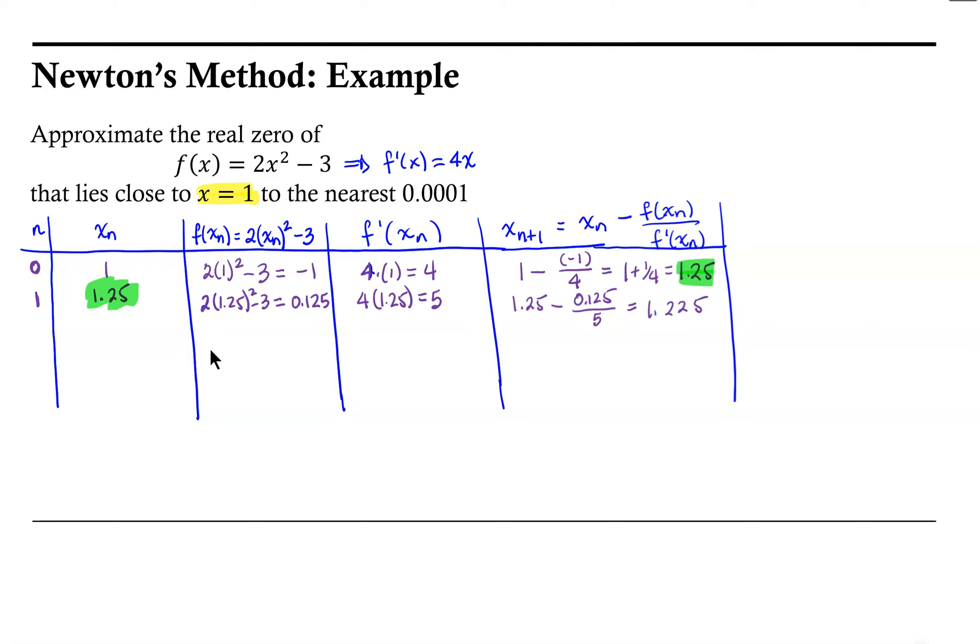Our next approximation would be 1.25 minus 0.125 over 5, and that is approximately 1.225. So notice that these two iterations match in the first decimal place. So then 1.225 becomes our next approximation.